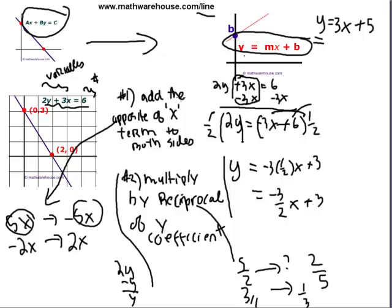Let's recap: add the opposite of the x term to both sides — the opposite of 3x is negative 3x, we added that to both sides. Step 2 is multiply by the reciprocal of the y coefficient, which was 2 here, so the reciprocal is 1 half. Let's practice this with a few more equations.